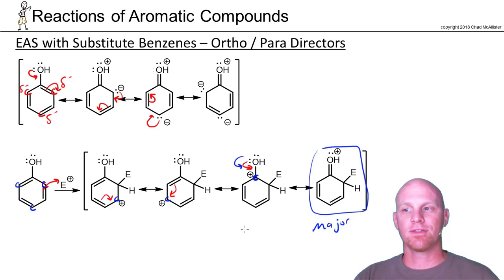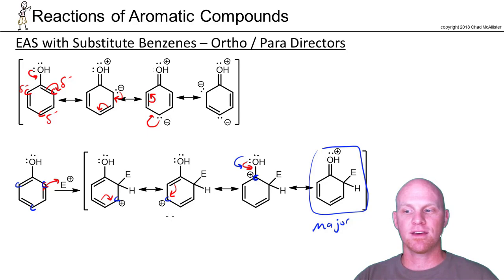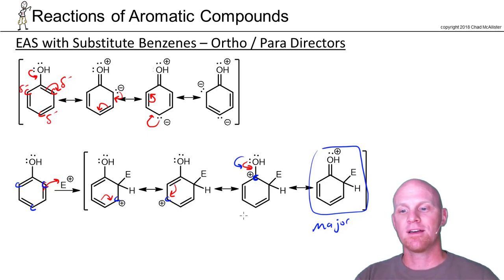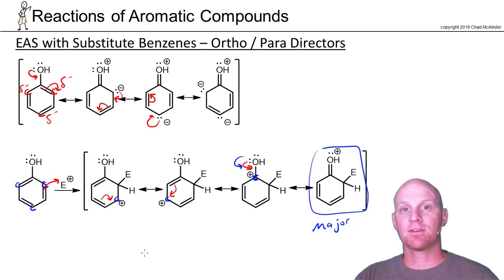So whether you look at an ortho-para director as having increased electron density in the reactant on the ortho- and paracarbons making them more nucleophilic, or as stabilizing the intermediate with an extra resonance structure only when the electrophile adds ortho or para — that's the deal. These ortho-para directors activate the ortho, meta, and para positions, but they activate the meta only a little bit; they activate the ortho and para a lot.